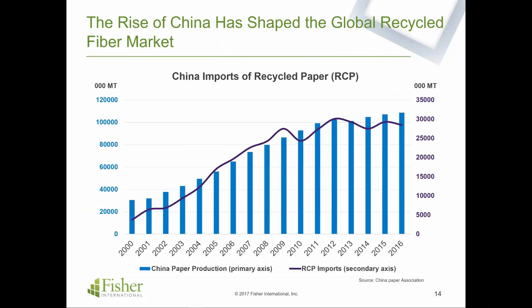What's phenomenal is how quickly China has grown. Blue bars show China's paper production on the left axis, and the purple line shows imports of RCP — recycled paper — on the right axis. Imports of recycled paper grew from really a small amount, a couple million tons per year in 2000, to close to 30 million tons in the most recent year. You can also see that the growth trajectory has flattened somewhat — the curve has bent a little bit.